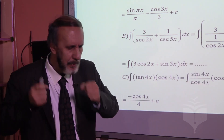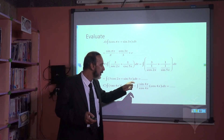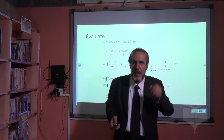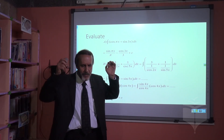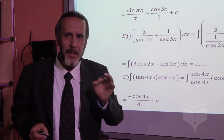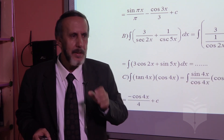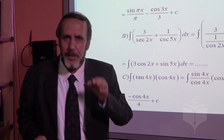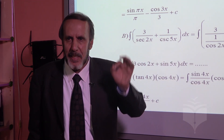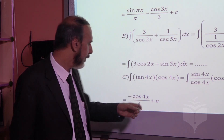Number c: tangent(4x). We change tangent — tangent of an angle equals sine of that angle over cosine of the same angle. Multiplying: we have cosine(4x) in the numerator and denominator, so they cancel. What remains is sine(4x). Sine(4x) is in standard form because the power of sine is 1 and the power of x in the angle is also 1. The integration of sine gives negative cosine(4x) over 4, plus c.